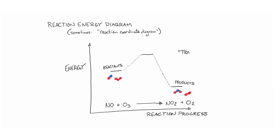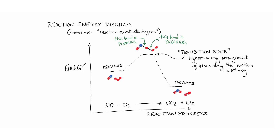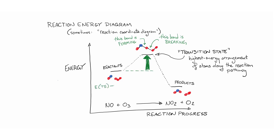Neither of those things is complete yet. This structure in between is called the transition state. We represent the bonds in the transition state that are in the process of being broken and formed with dashed lines. The transition state is an unstable arrangement of atoms — it's the highest energy point along the reaction pathway, higher energy than both the reactant molecules and the product molecules. The difference in energy between the transition state and the reactants, the energy barrier to the reaction, is called the activation energy, abbreviated as Eₐ.